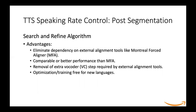The advantages of our approach are as follows. Number one, we eliminate the dependency on external alignment tools such as the Montreal Forced Aligner. We also obtain comparable or better performance than the Montreal Forced Aligner. We remove the extra vocoder step required by external alignment tools, and this provides an optimization-free and training-free solution for new languages once the context generation module and vocoder are multilingual in nature.